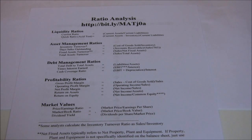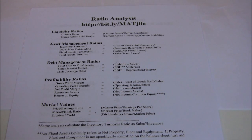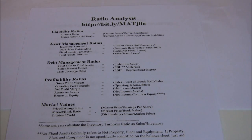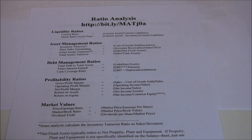Every finance book has a slightly different set of financial ratios — there are tons of different ones out there. Some are specific to particular industries. For example, one of the big ones in retail is sales per square foot, which works great in retail but doesn't work in other industries. That ratio would make no sense trying to evaluate a company like Merck, which is a pharmaceutical company. So these are just some basic ratios.